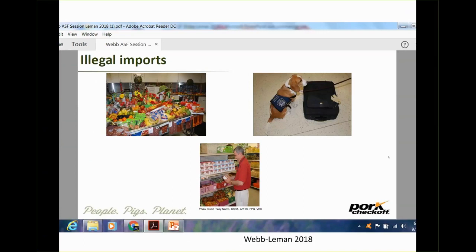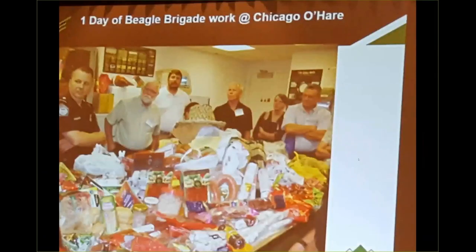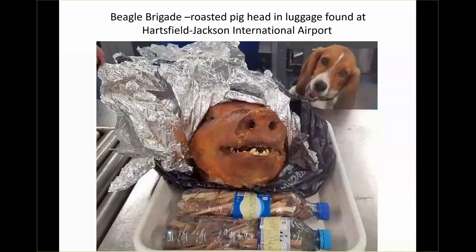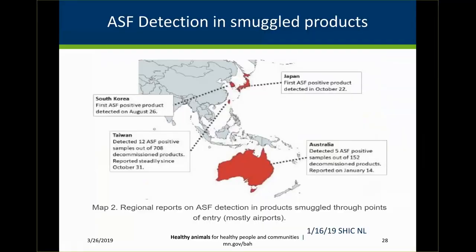We have a Beagle Brigade that has been very helpful in trying to identify some of these illegal imports. In fact, what's shown here is what they found at Chicago O'Hare in a single day — it looks like a grocery store. It takes about $200,000 to breed and train one of these dogs. This risk is not unique to the United States — contaminated and infected tissue has been found in Japan, South Korea, Taiwan, and Australia.